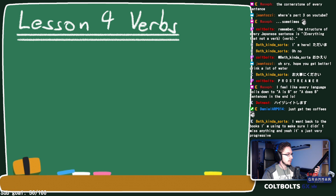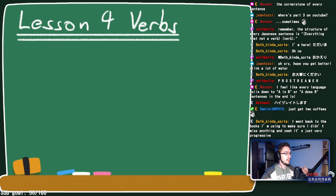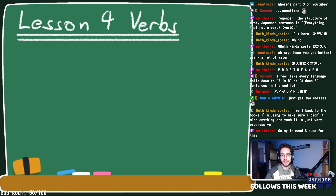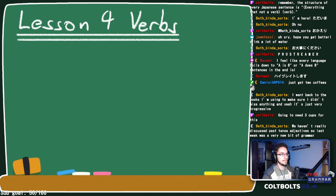Welcome to Japanese 101, Lesson 4. Quick recap of last week: we talked about adjectives — how certain things can have certain attributes. We covered i-adjectives, which work as predicates themselves, and na-adjectives, which rely on the copula to make a sentence work. We also touched on past tense and negative forms of adjectives.